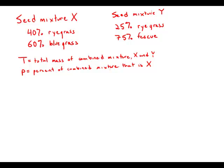So this is a very standard mixture problem. I'm going to use T for the total mass of the combined mixture. This is what's called a dummy variable because it will cancel out. And I'm going to call P the percent of combined mixture that is actually X. And this is what the question is asking for, this P.